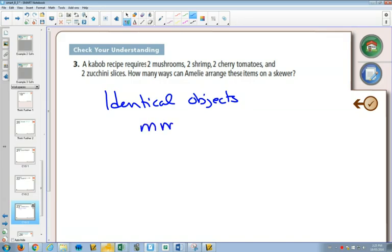Well, we could represent this: mushrooms with M's, shrimp with S's, cherry tomatoes with C's, and zucchini slices with Z's, and they're identical.